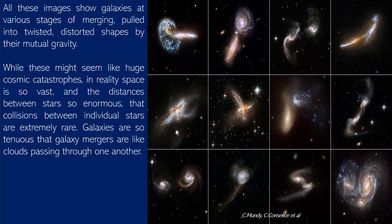All these images show galaxies at various stages of merging, pulled into twisted, distorted shapes by their mutual gravity. While these might seem like giant cosmic catastrophes, in reality space is so vast and the distances between stars so enormous that collisions between individual stars are extremely rare. Galaxies are so tenuous that galaxy mergers are like clouds passing through one another.